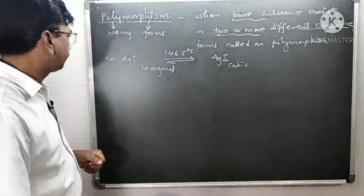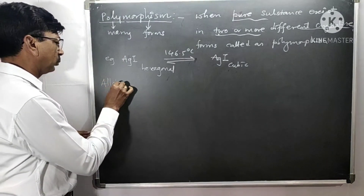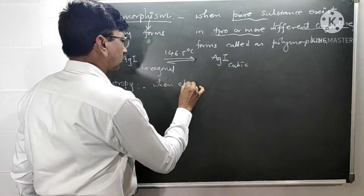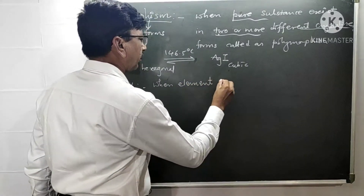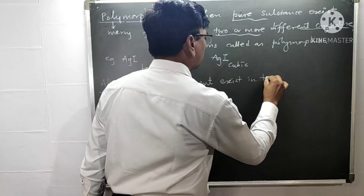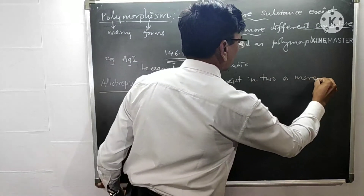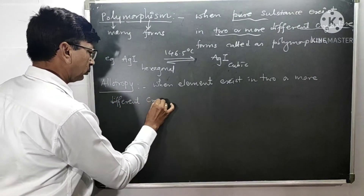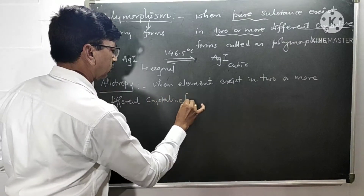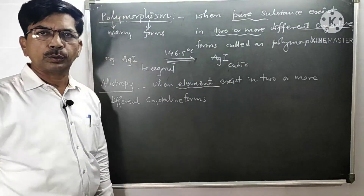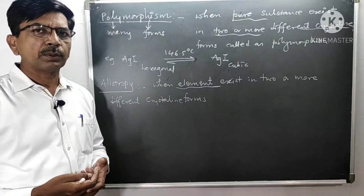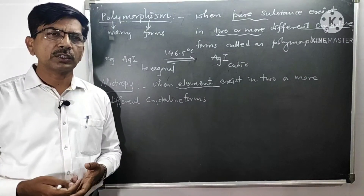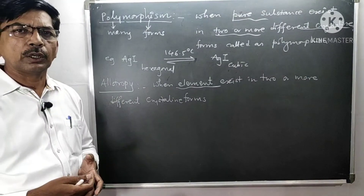Now we consider the case of allotropism. When an element exists in two or more different crystalline forms, it is called allotropism. For example, sulfur exists as rhombic sulfur and monoclinic sulfur. The same is also the case for phosphorus.